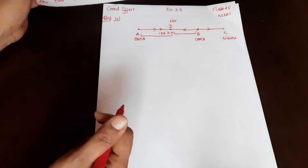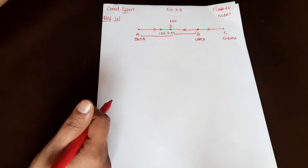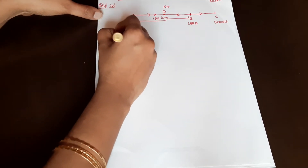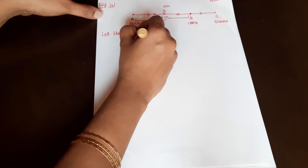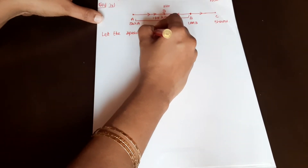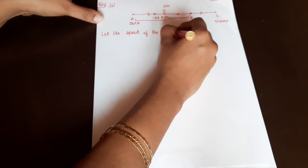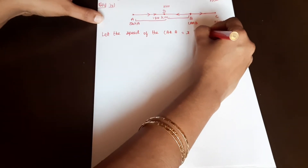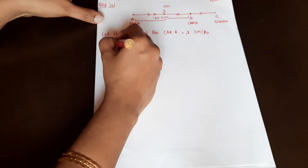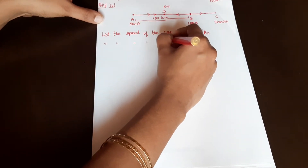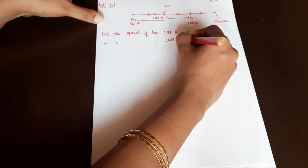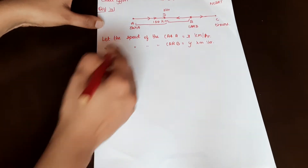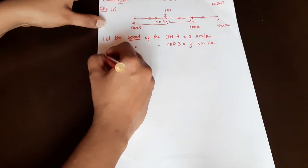Let the speed of Car A be equal to x kilometres per hour, and let the speed of Car B be equal to y kilometres per hour. Now, the speed formula: Speed equals Distance divided by Time.